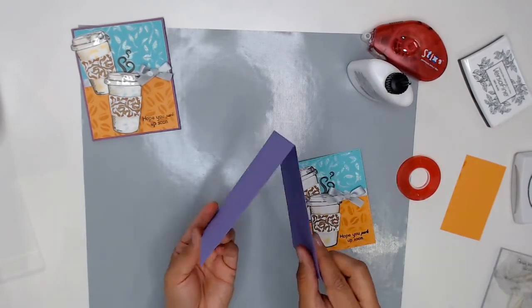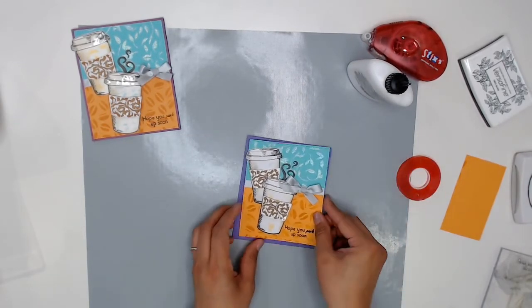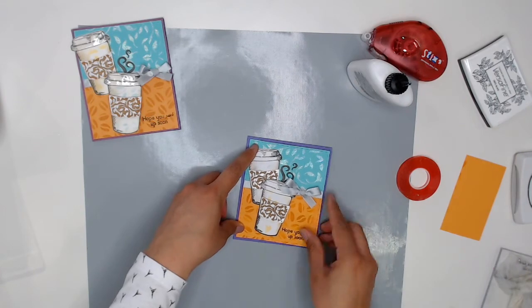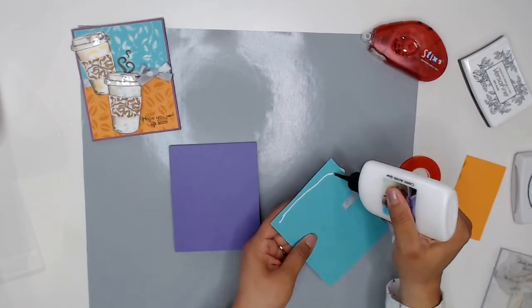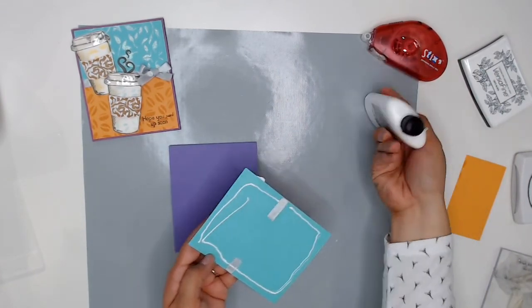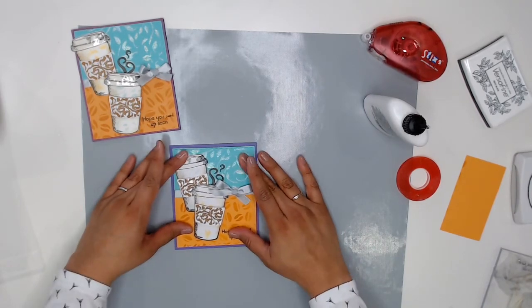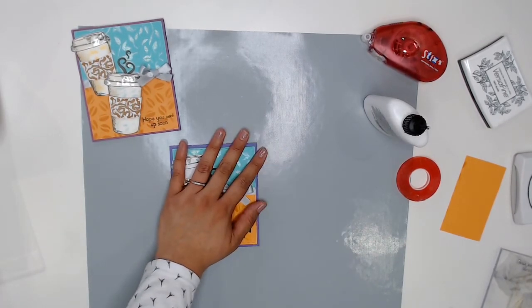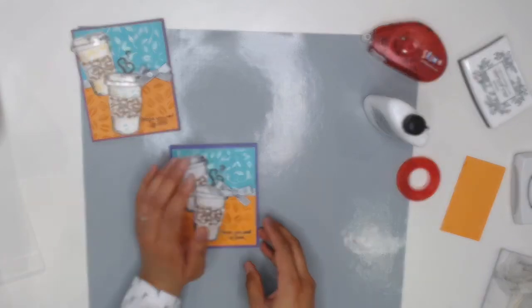The last thing I'm going to do is add my card front to my card base and my card base is just a tent fold card that I made from some cardstock and I've sized it so that it has a little leaves a little border around my card front so just let me add some glue to that and then I will be done.